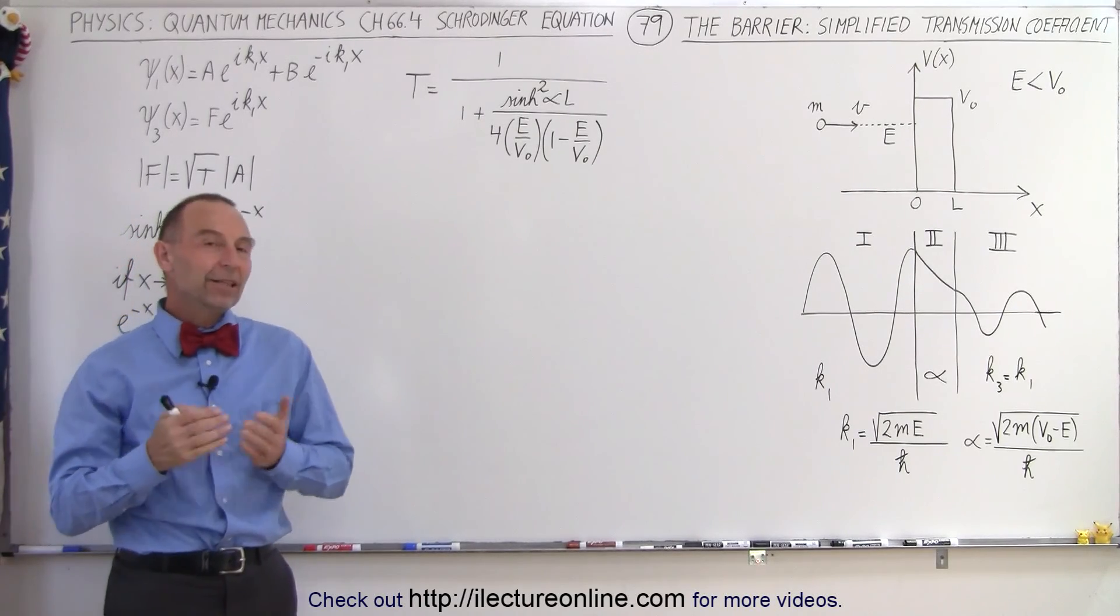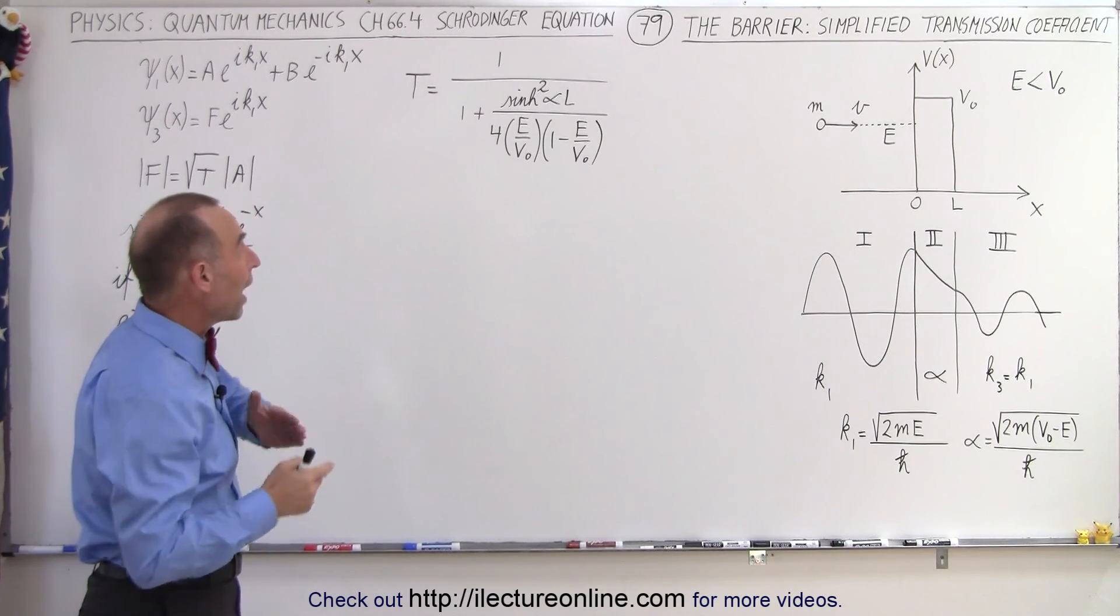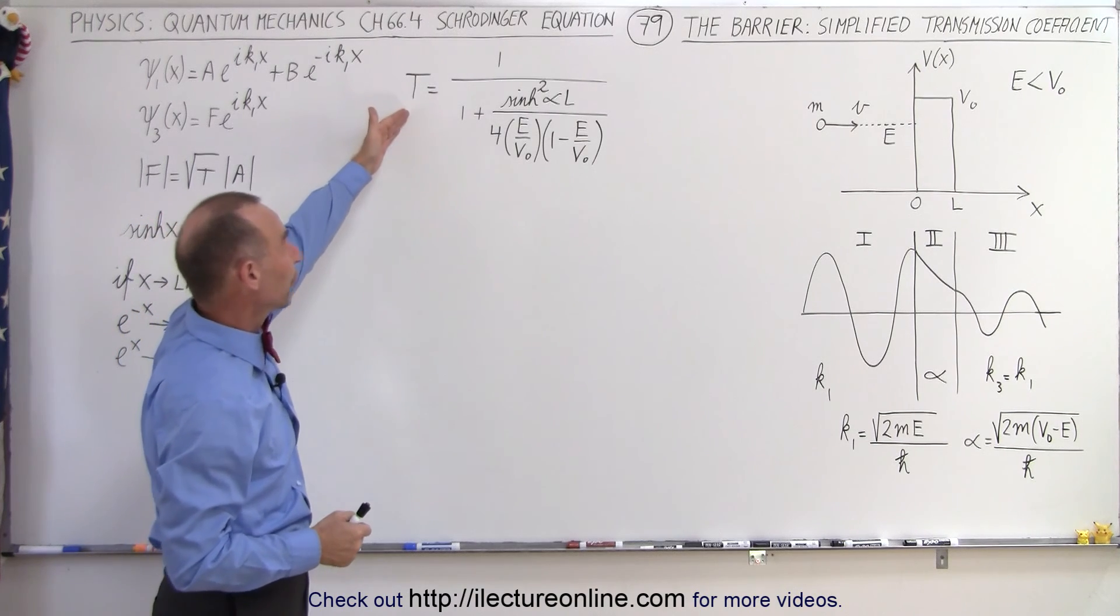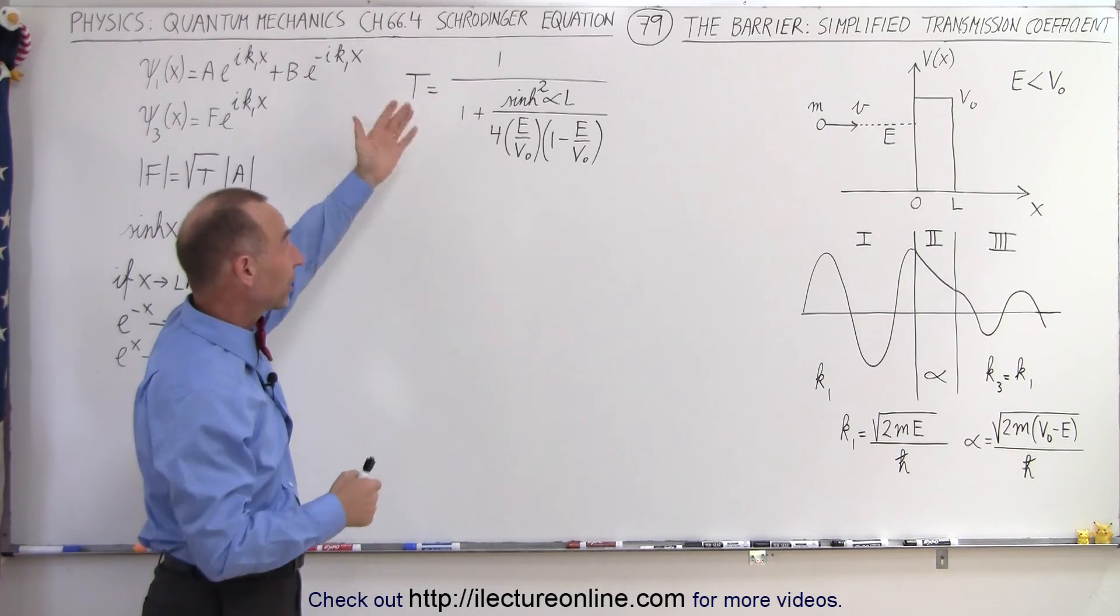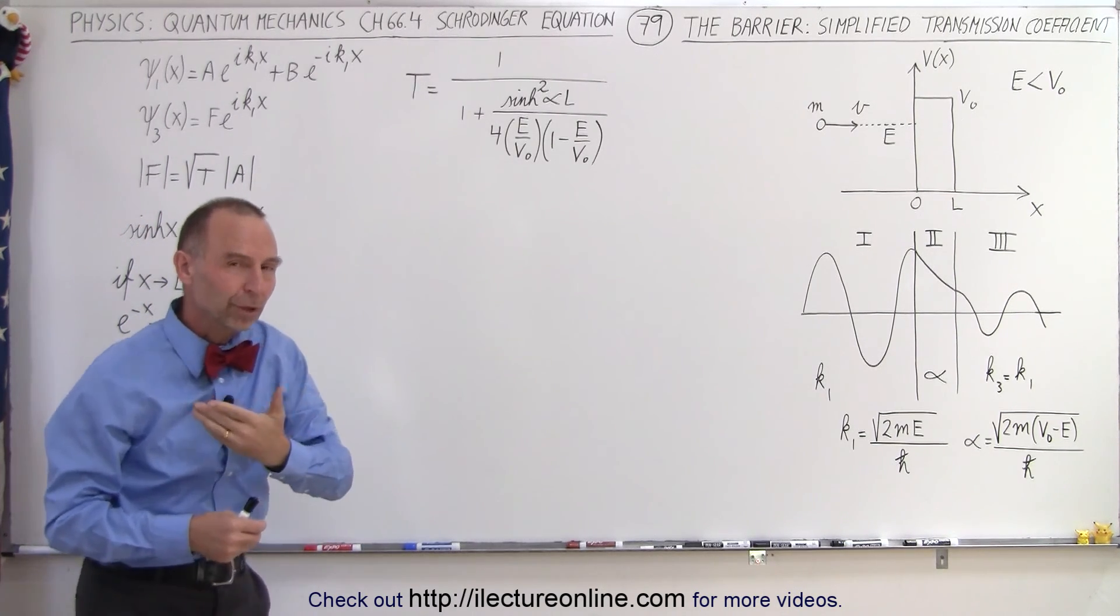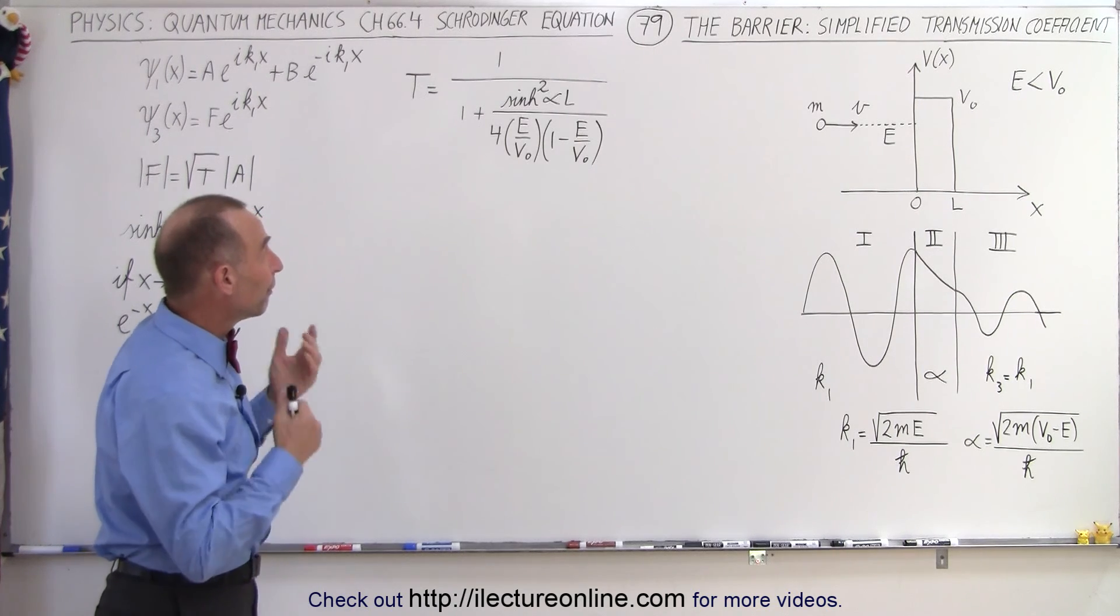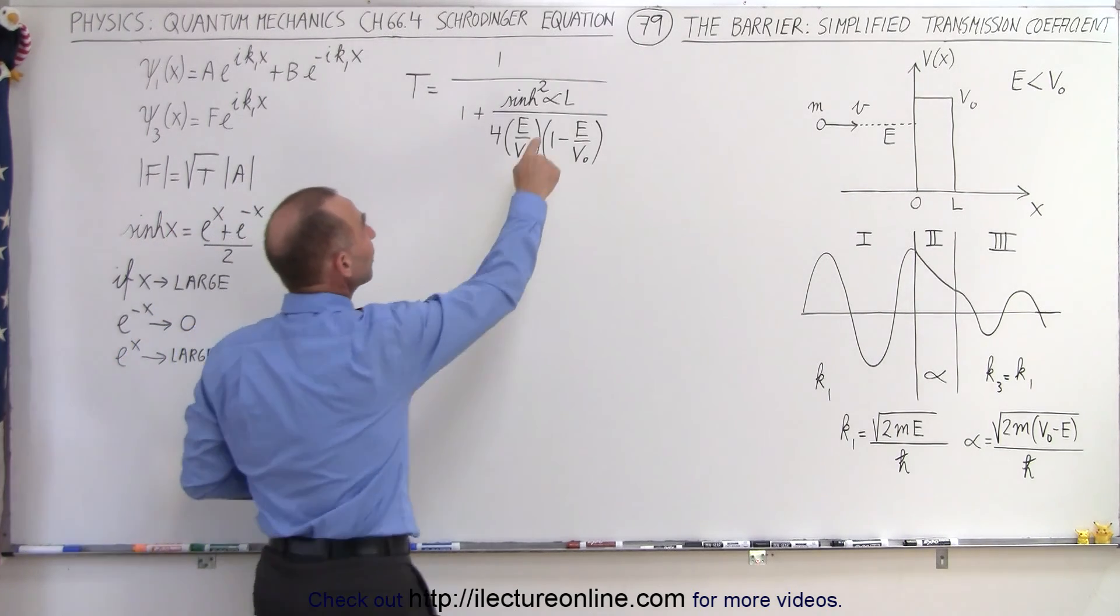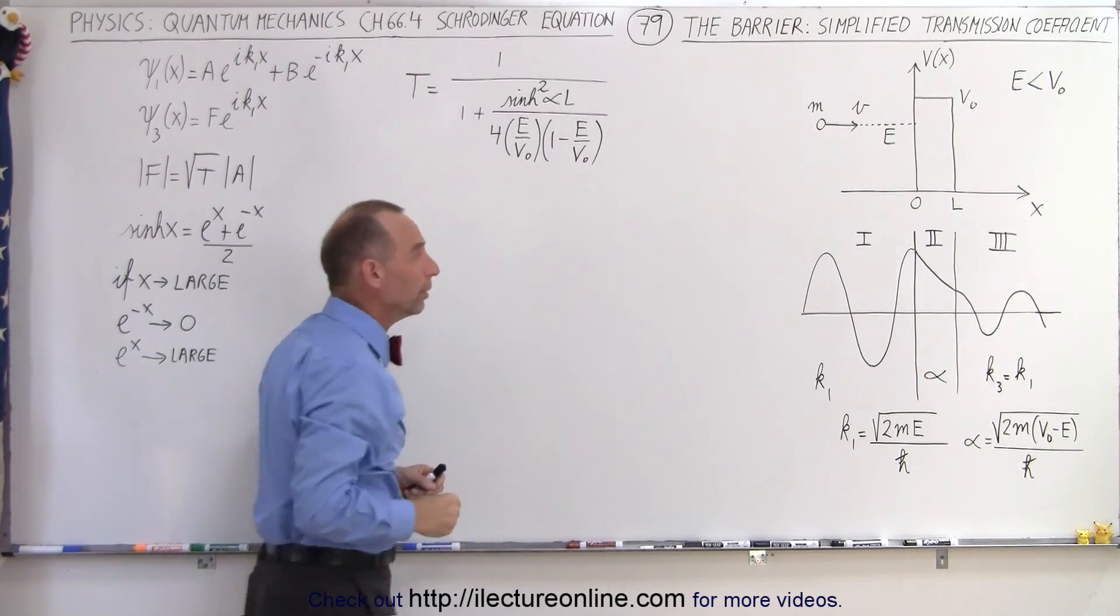Welcome to Electronline. In this video we're going to show you how we can take the transmission coefficient equation here, which is rather complicated, and turn it into something that looks a little simpler by assuming that alpha times L is much larger than 1.